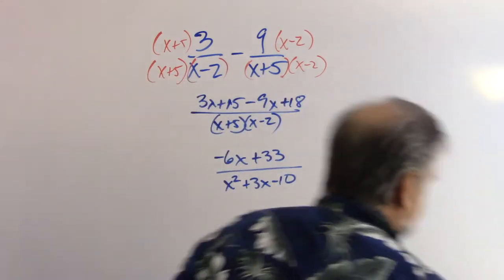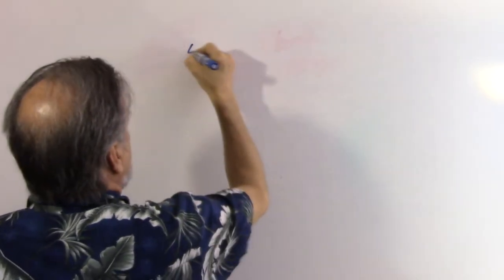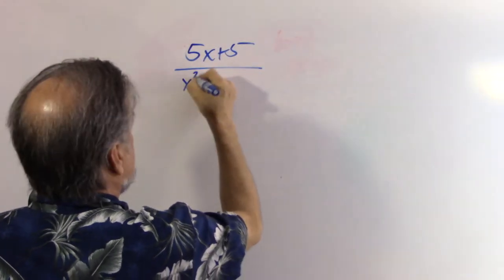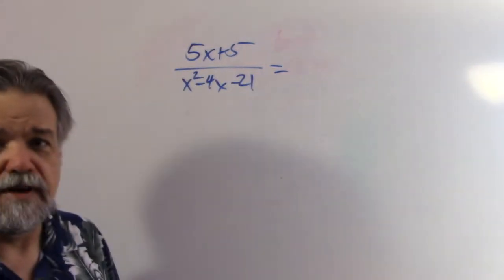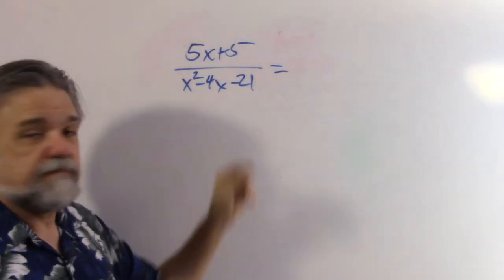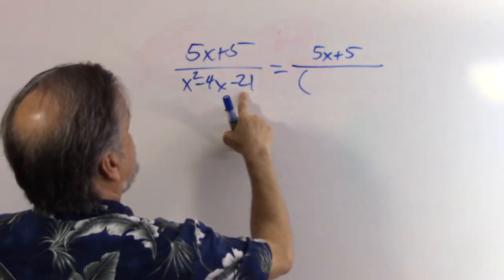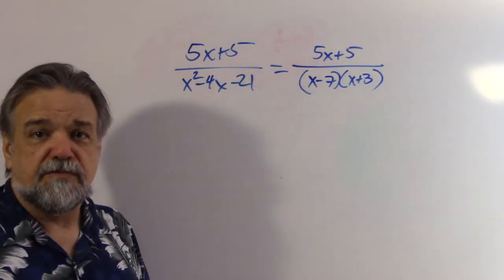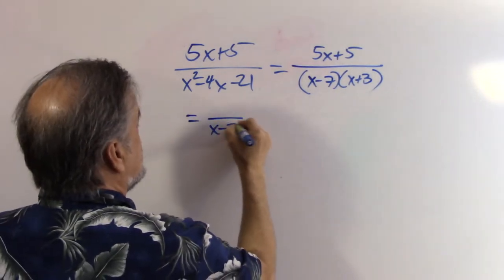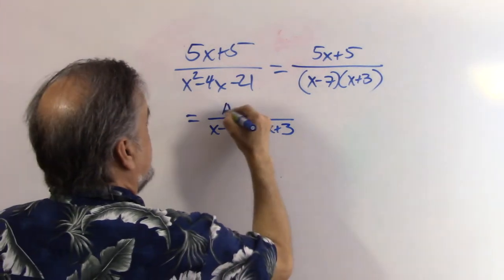Let's start with our first example. I'm going to take five x plus five over x squared minus four x minus 21, and I want to decompose that into partial fractions. Step one: factor the denominator. So this is going to be five x plus five over — 21 is seven times three — so this will be x minus seven times x plus three. The two partial fractions that we're going to come up with are going to be something over x minus seven and something over x plus three. We don't know what those somethings are right now, so let's just call them A and B.